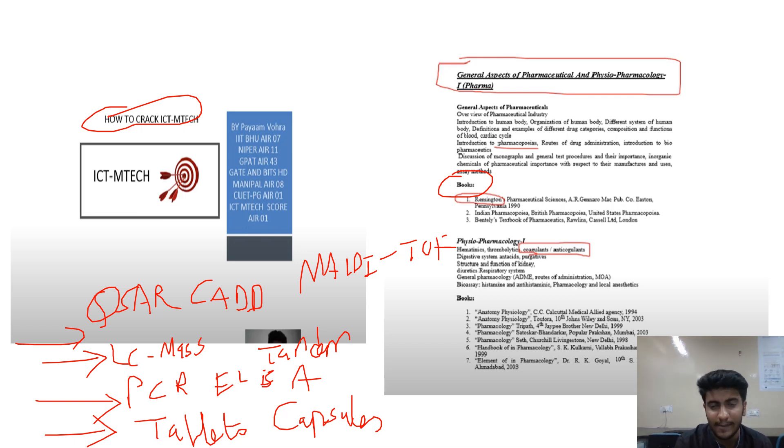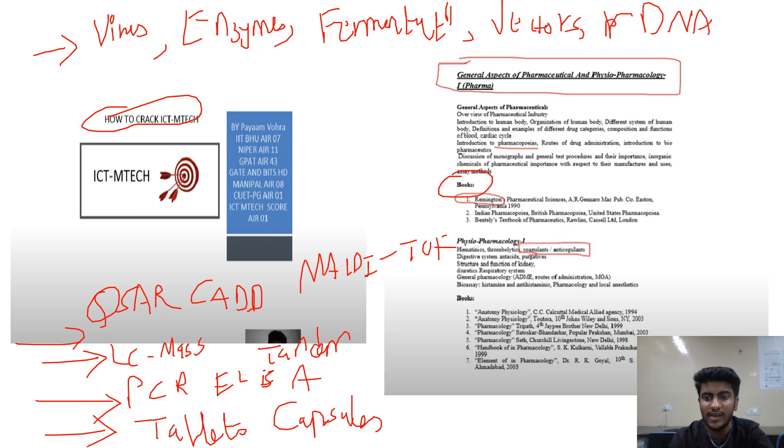Micro, biochem, biotech - anything can come. Virus, bacteria, fungi - something comes. Sometimes they ask about biochemistry cycles, sometimes about enzymes, sometimes about fermentation. Fermentation is a very important term - fermentation questions definitely come, you can make sure of that. Then vectors, rDNA technology, plasmid, cosmid, DNA ligase, restriction endonuclease - all these things are being asked very frequently, so you should know all these things.